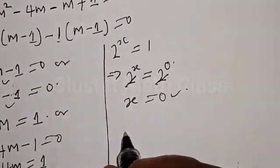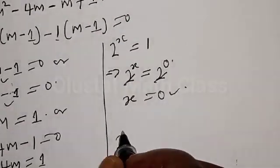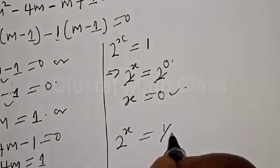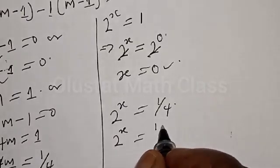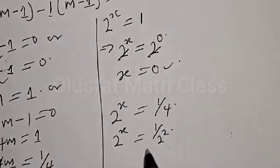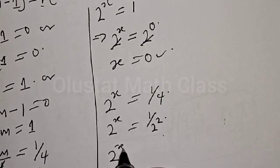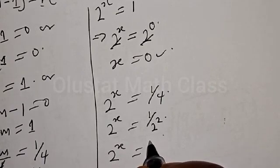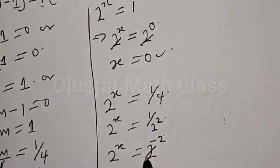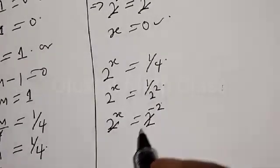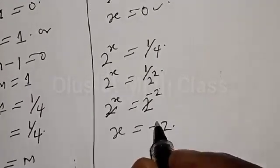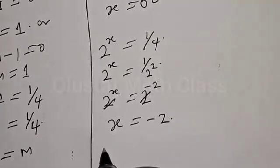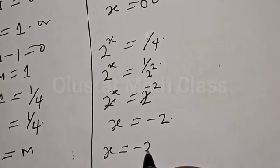For the second case, 2 raised to power s equals 1 over 4, which equals 1 over 2 squared, which equals 2 raised to power minus 2. Since the bases are the same, s is equal to minus 2. Therefore our final answer is s equals minus 2.